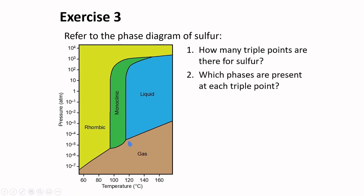Which phases are present at each triple point? At this triple point, the rhombic phase is present, the monoclinic phase is present, and the gas phase is present. They are all in equilibrium at this triple point. Perhaps you could also identify the phases present at this triple point, and this triple point. Give the approximate temperature and pressure at each triple point.